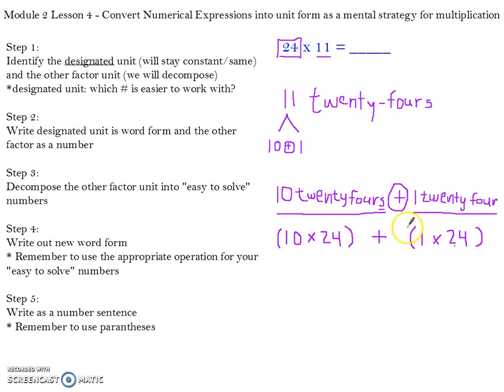And if you've noticed, the designated number or the designated unit that I chose, 24, has remained the same in each of the steps that I've done. The other factor, the other unit, I have broken up and I have changed. Now, step 6 is we solve and make sure to use PEMDAS, order of operations.